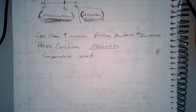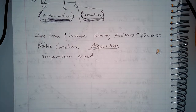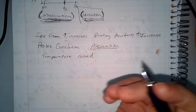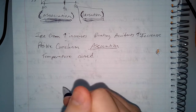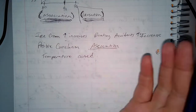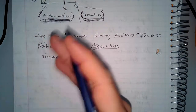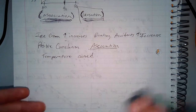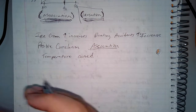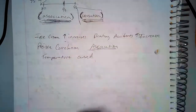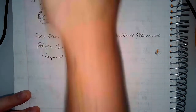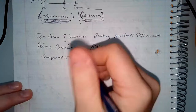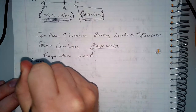Last thing in the notes: determine if the following is an association or causation. A controlled experiment showed a positive association between the number of cigarettes smoked and the probability of developing lung cancer. Would there be less lung cancer if not as many people smoked? Or if more people smoke, would there be more lung cancer? That one is definitely a causation.